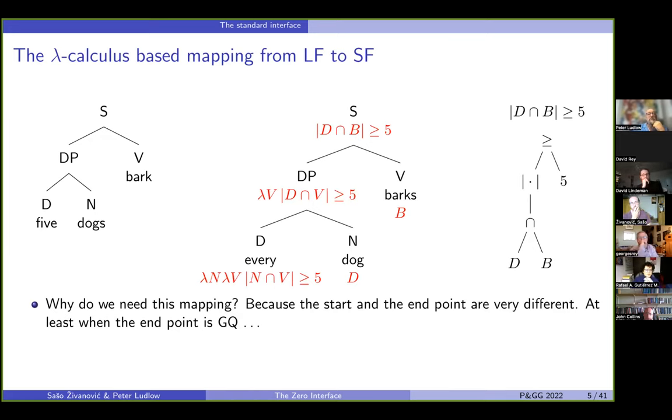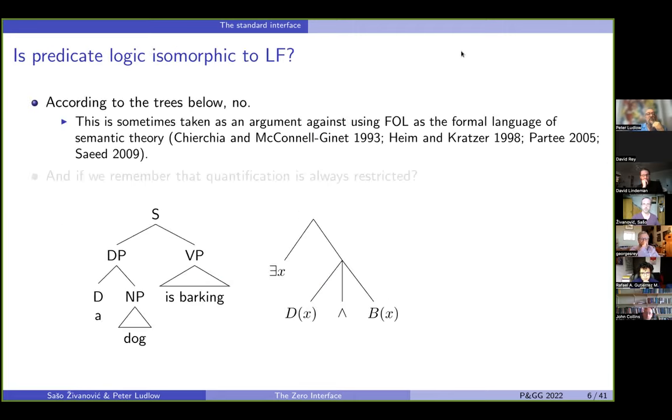So we take our syntactic structure, we look up the denotations of the terminals, and then we recursively compute the denotation of the root. And the question I would like to ask is, why do we need this mapping at all? And the answer is actually very obvious, because the starting point and the end point are really different things. Well, I have chosen here the GQ representation as the endpoint, because this is sort of a standard thing. But our idea here is actually perhaps the start and the end point would not be all this different if we chose some other system, let's say first-order logic.